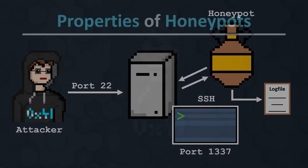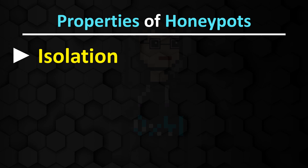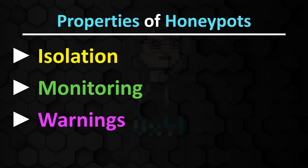And that brings us to the properties that a honeypot should have. Honeypots are isolated from critical systems and networks to ensure that a successful attack does not impact the production environment. All activities carried out by an attacker within a honeypot are monitored and logged. This allows analysis of the so-called tactics, techniques and procedures — TTPs for short — that is, the attacker's approach. All of this, of course, is for prevention: to detect attacks early and alert security managers to prevent successful attacks on critical systems or the network.